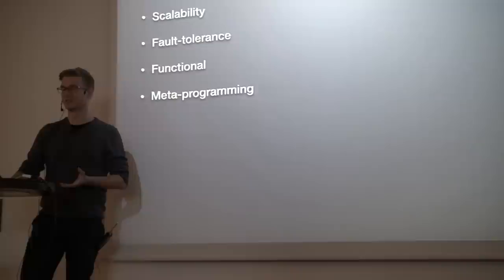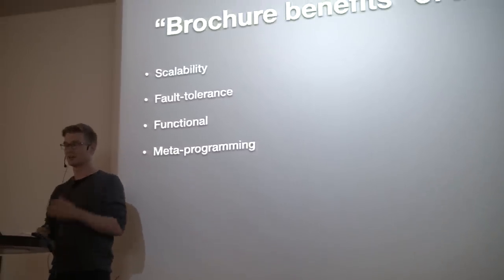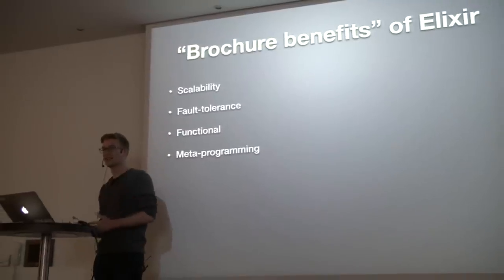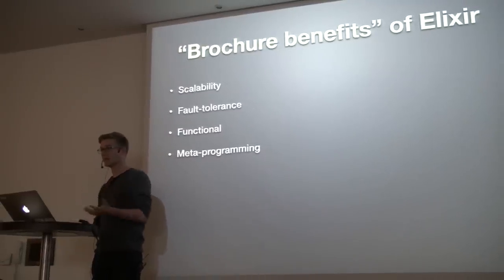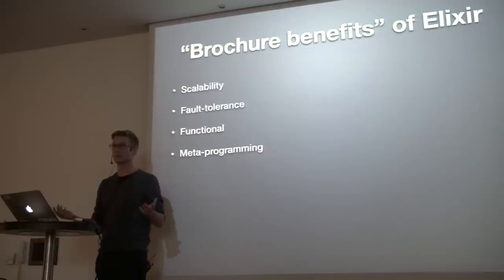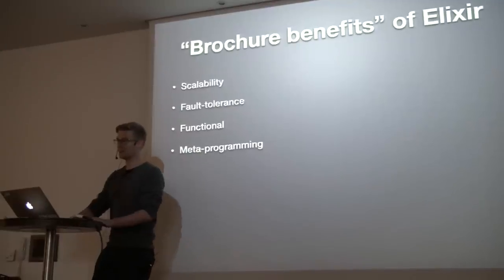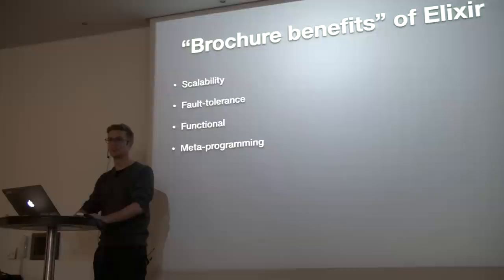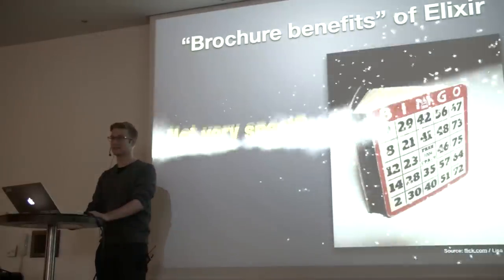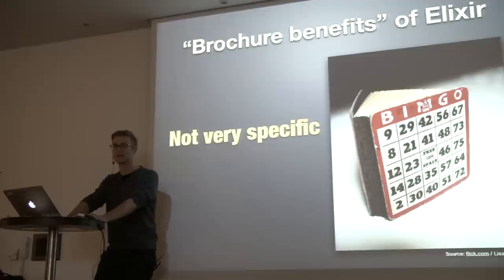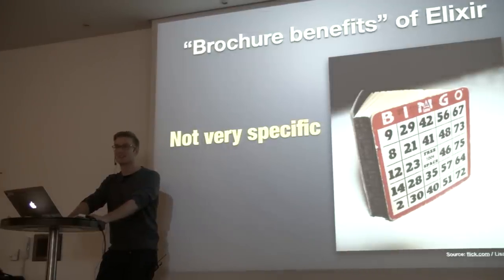The brochure benefits of Elixir — the ones you see on the website — are that it's scalable, fault tolerant, a functional programming language, and supports metaprogramming. But when you want to introduce a new language and you have a big product team and people who are charging you, that doesn't go too well. They say all of these things sound great, but our apps are actually pretty stable — so why do we need to change anything?